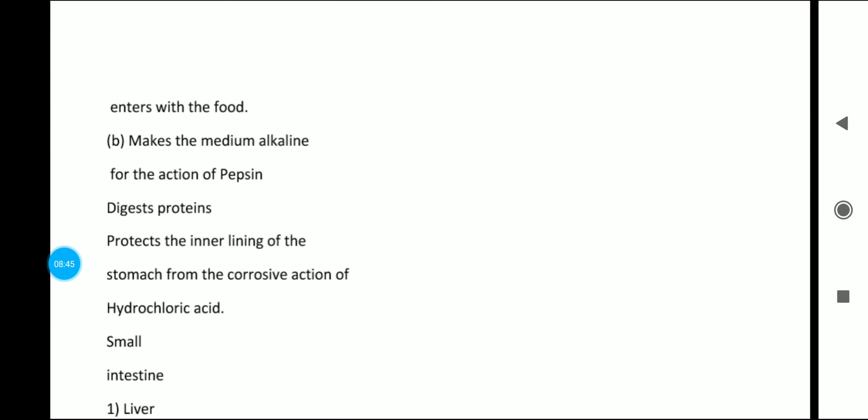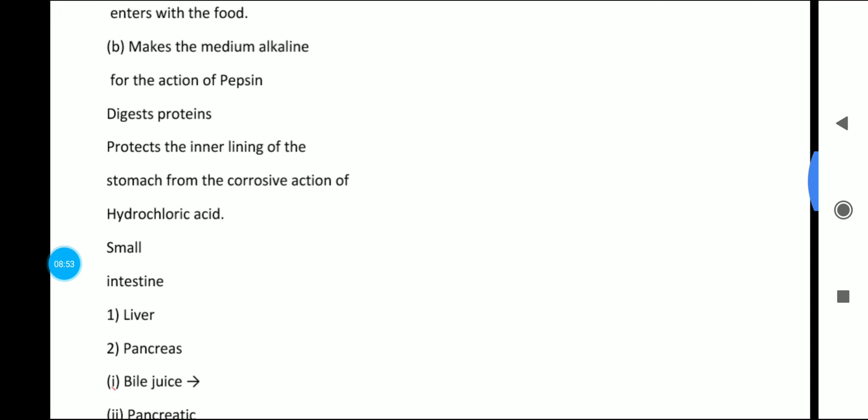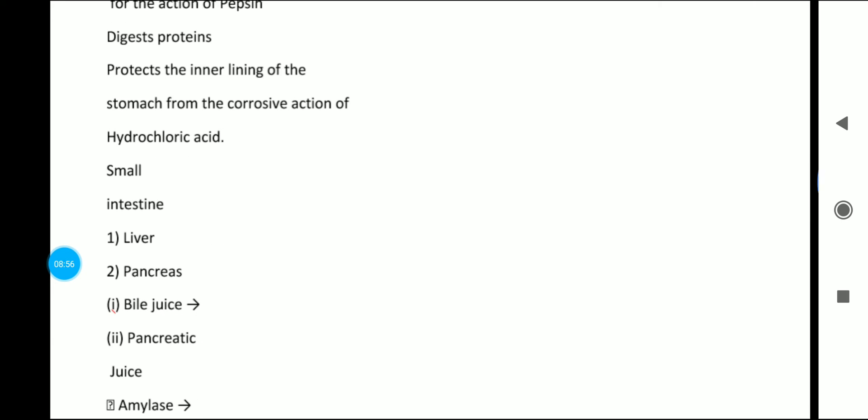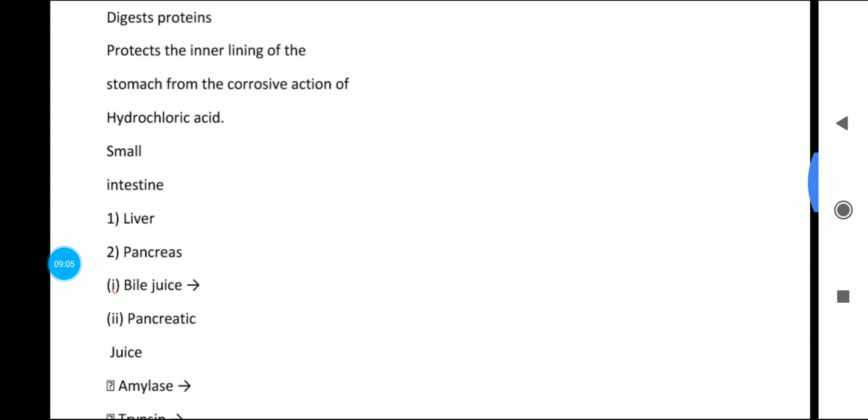Pepsin digests the proteins that enter with the food, converting them into peptides and peptones. Mucus protects the inner lining of the stomach from being burned by the acid.